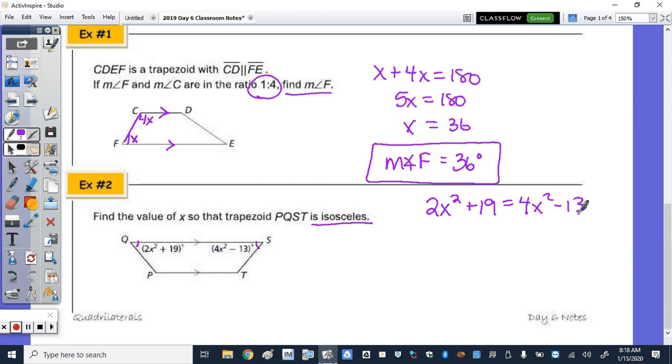I'm going to put it in standard form. I want it set equal to zero. So if I bring over the 2X squared by subtraction, 4X squared minus 2X squared is 2X squared. Subtract the 19, we get negative 32. Now I'm going to factor out a greatest common factor of 2. And I get X squared minus 16. Now factoring that binomial,